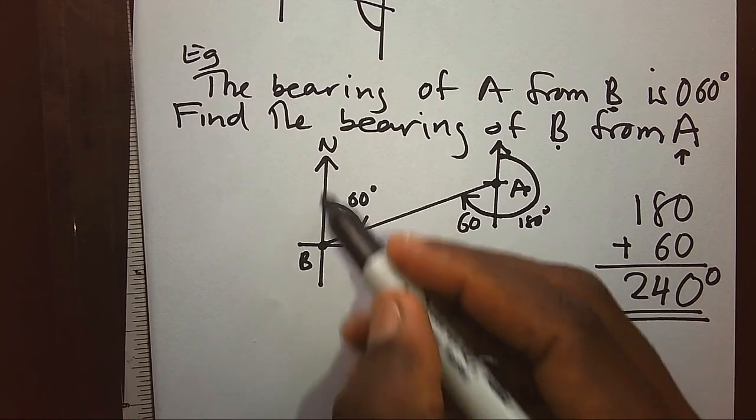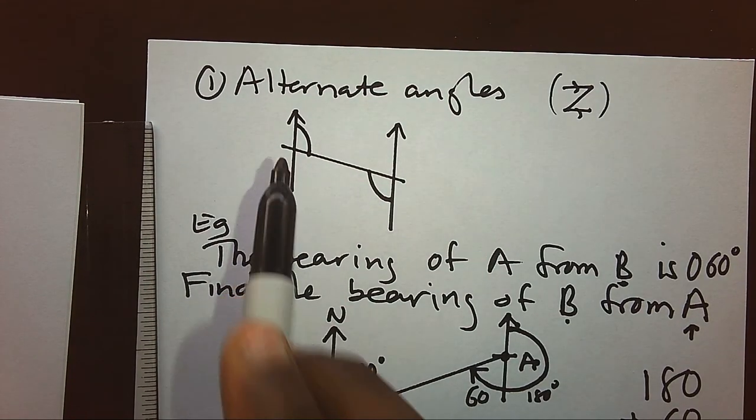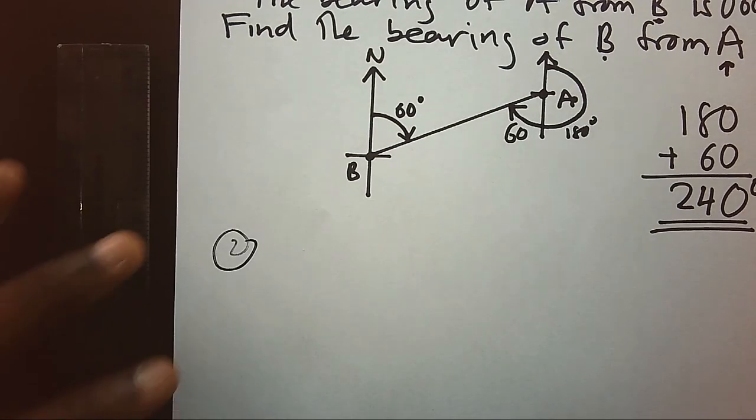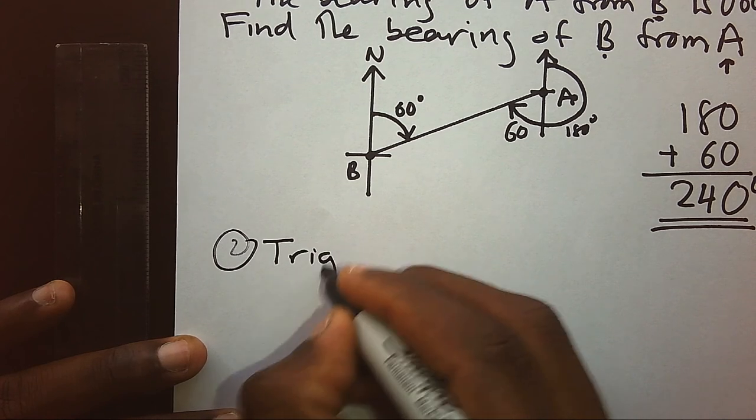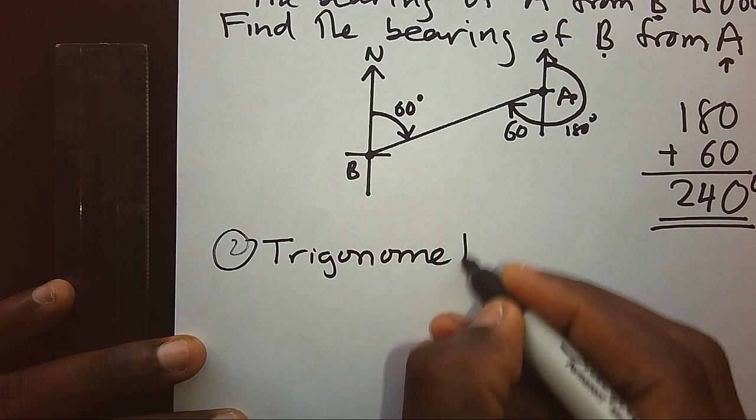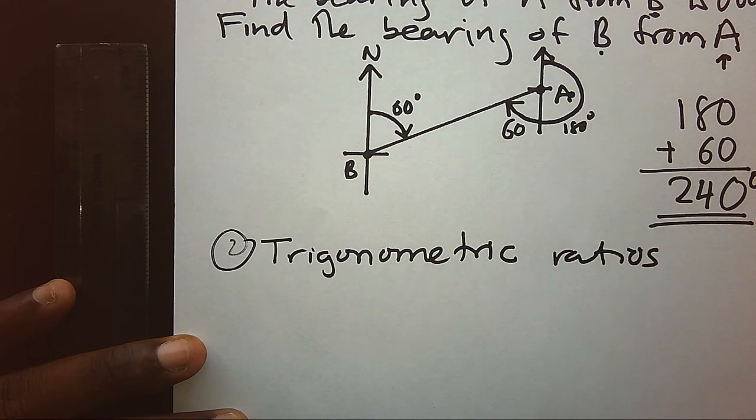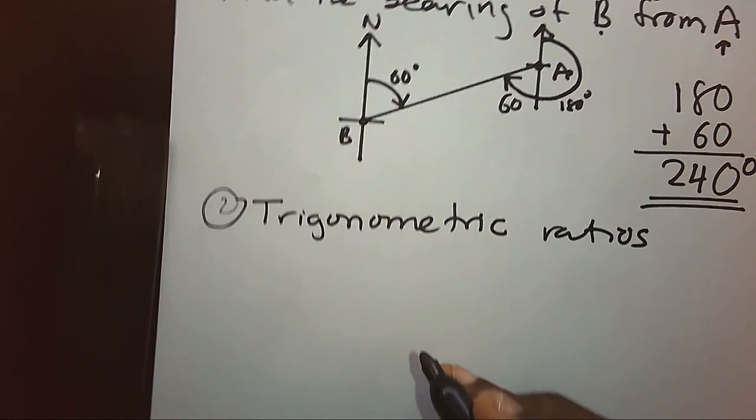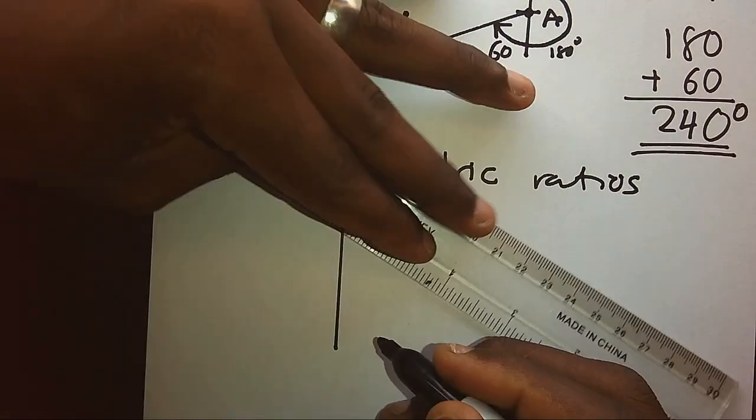Now to get this 240 we use the knowledge of alternate angle theories. Two, we need to know the trigonometry ratios.